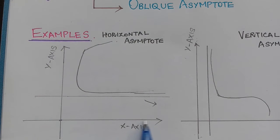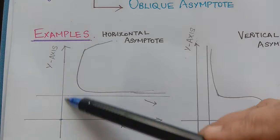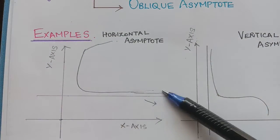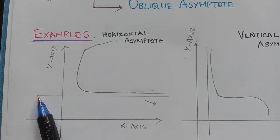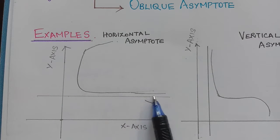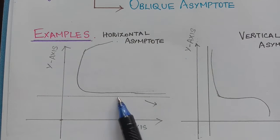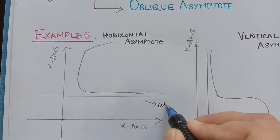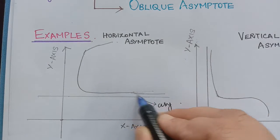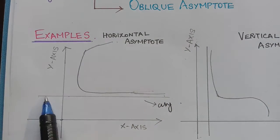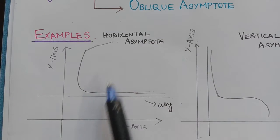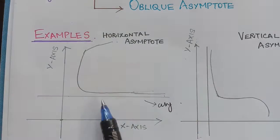Here we have taken this axis to be the x-axis and this is the y-axis. We can see that here we have a curve and there is a line which is approaching the curve. This line will touch the curve at infinity, and so this line is said to be the asymptote to this curve. This line is parallel to the x-axis, and therefore this is known as horizontal asymptote.